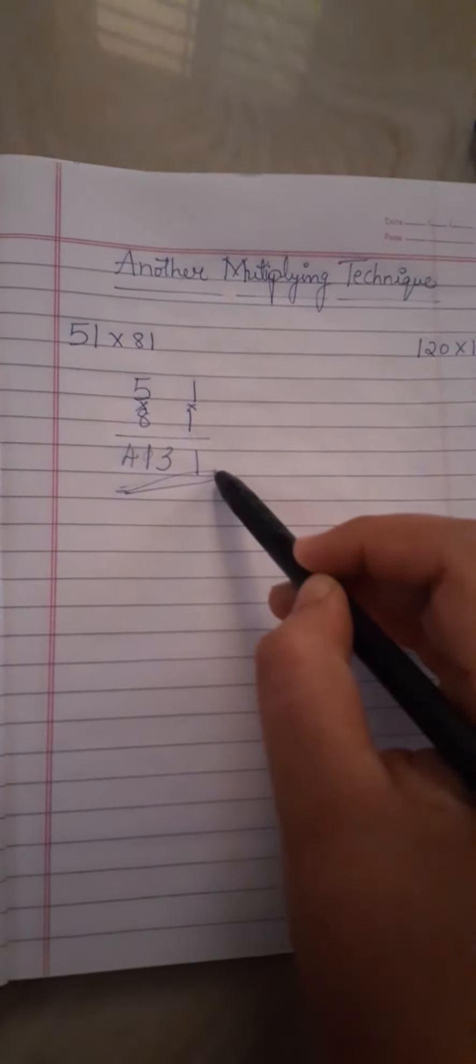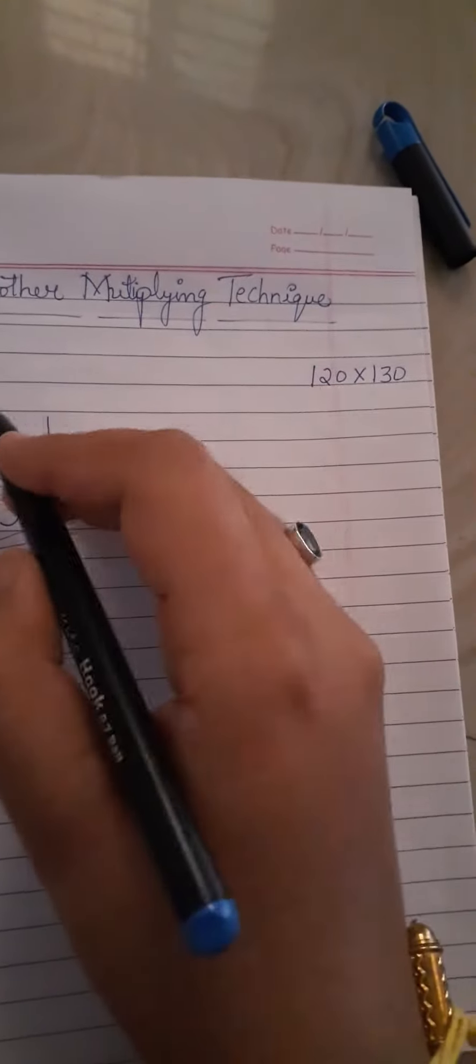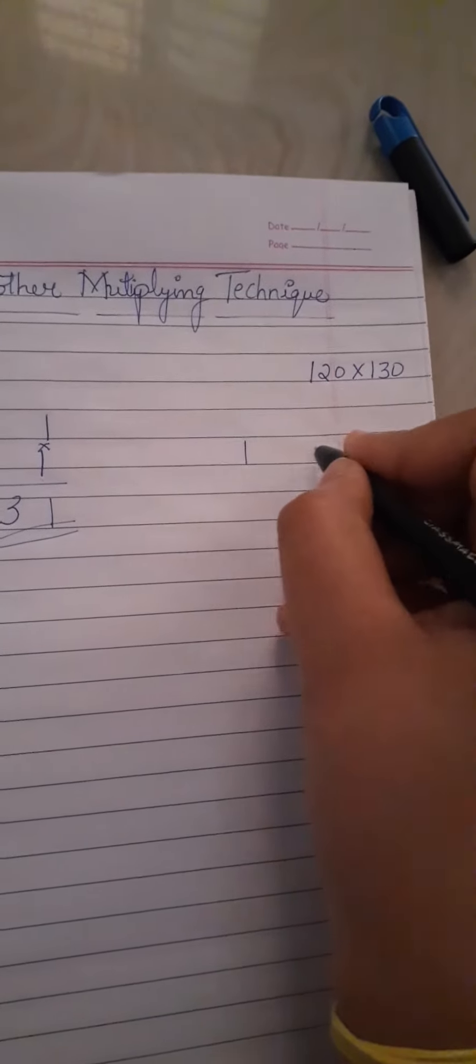So just we need to keep like this, right? So now we'll go with the three number multiplication, okay? The three number multiplication is somewhat it may look like complicated but still it is easy, just like the earlier one only.